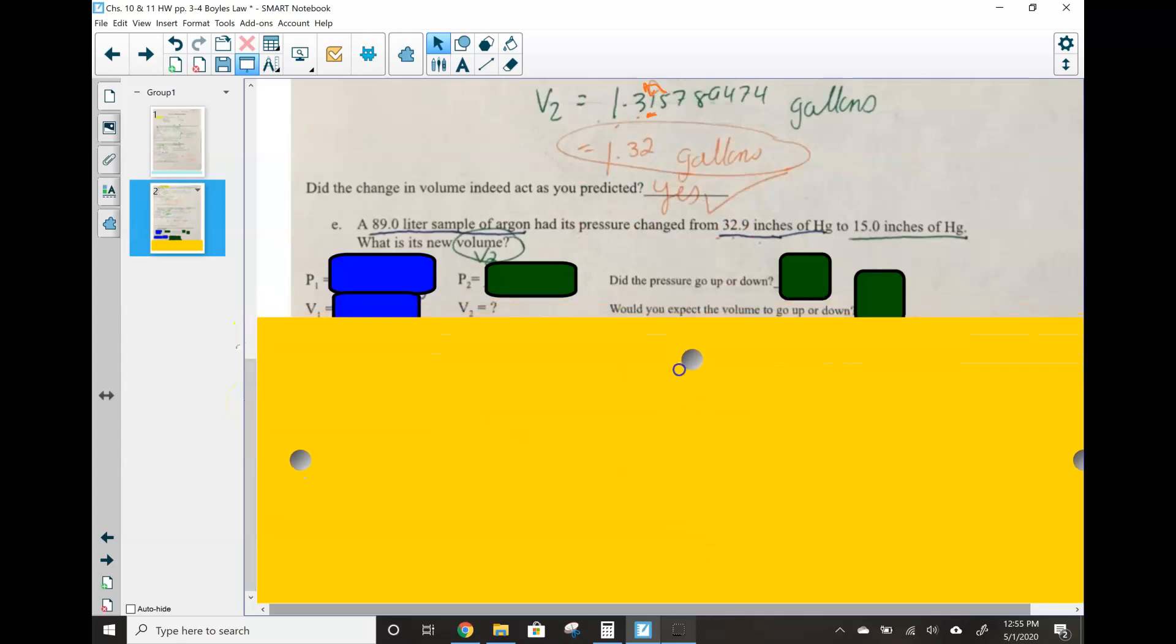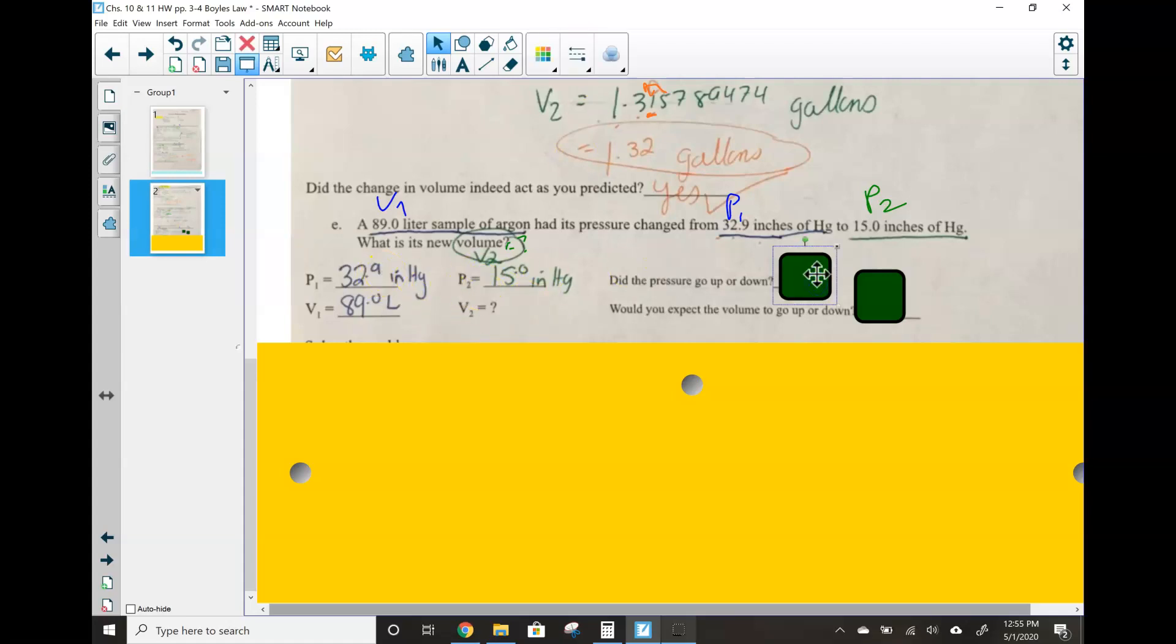An 89.0 liter sample of argon gas had its pressure changed from 32.9 to 15. So this is the initial volume. This is volume 1. It had changed from, so this is my pressure 1 to 15. This is my pressure 2. What is V2? Volume 2 equals question mark. So pressure 1, fill that in, 32.9. Volume 1, 89.0. Pressure 2, 15 inches of mercury. Volume 2 is unknown. This is what we're solving for. Look at your pressure. It went down. That means volume should go up.